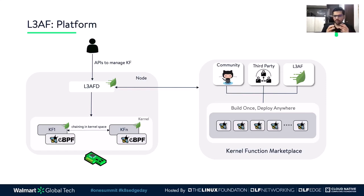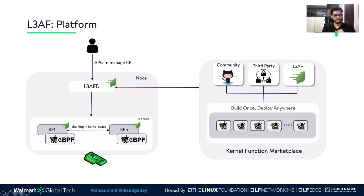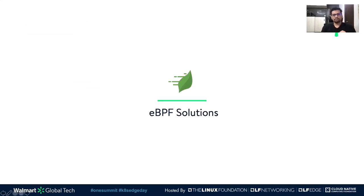While I walked you through an example of a new kernel function deployment, all the operations discussed in the previous slide can be triggered through APIs. In the next section, we will take a closer look at the eBPF kernel function ecosystem.